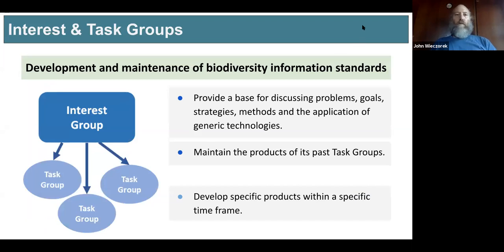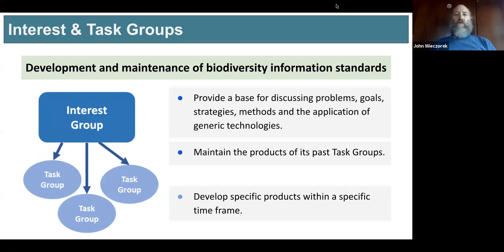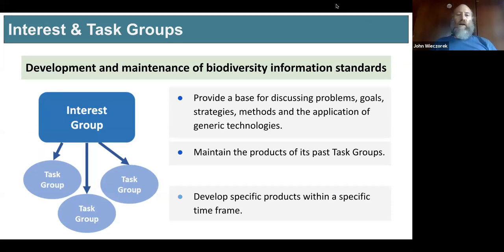The interest groups and task groups in TDWG are meant to develop and maintain biodiversity information standards, simple as that. They provide the basis for discussion of problems and goals and strategies, the methods and applications of generic technologies to achieve those goals. The interest groups are kind of general and persist as long as the interest persists. Interest groups can spawn task groups, and task groups do things in a limited time period — they do what they're supposed to do and then they get closed. In any case, they're ephemeral, and the interest group maintains the products of the past task groups.